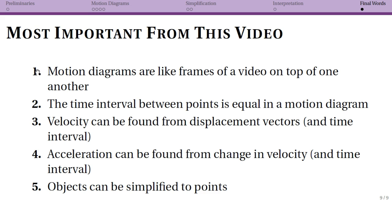To summarize: motion diagrams are like frames of a video placed on top of one another. The time interval between subsequent points must be equal — interpret and draw them that way. We find average velocity from displacement vectors knowing the time interval is constant, and average acceleration by subtracting velocity vectors, again knowing the time interval is the same. In most cases we simplify objects to points and just draw dots — this will also be important for free body diagrams. You can't make that assumption for rotating objects, but you shouldn't expect to see that for some time.